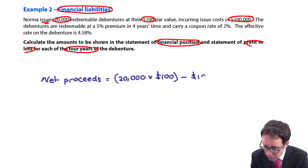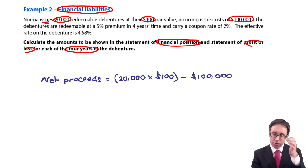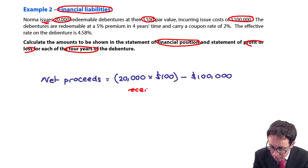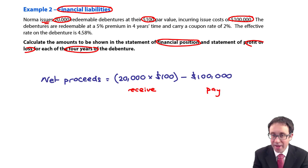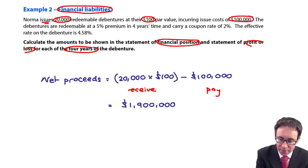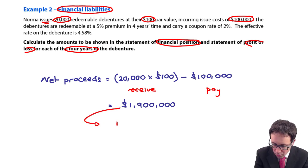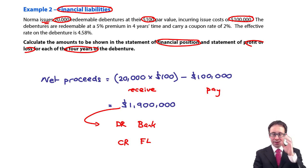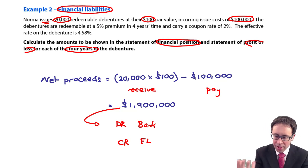We then deduct the issue costs, so that gives us net proceeds for initial recognition of $1.9 million. In terms of debits and credits, we will debit the bank and credit the financial liability. It is redeemable at a 5% premium, so 1.05 times $2 million gives us $2.1 million — that's what we will pay back in four years' time.